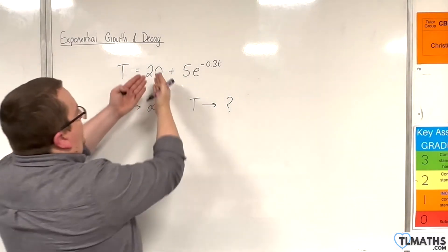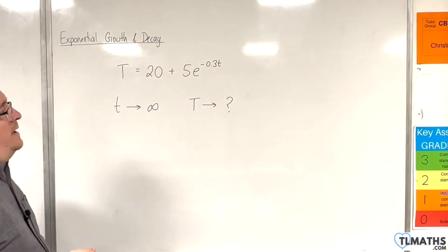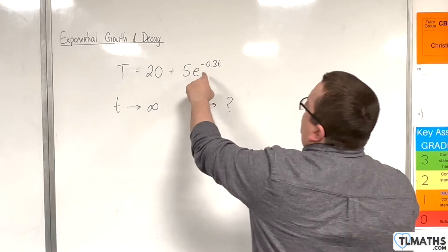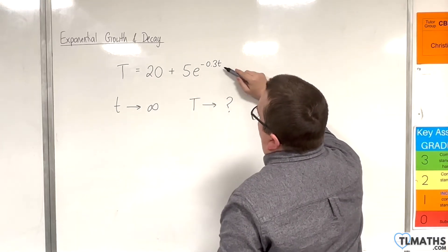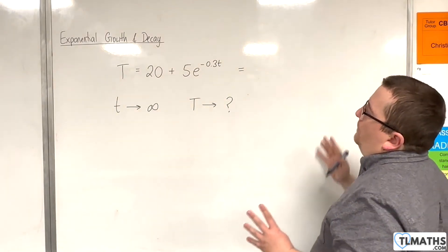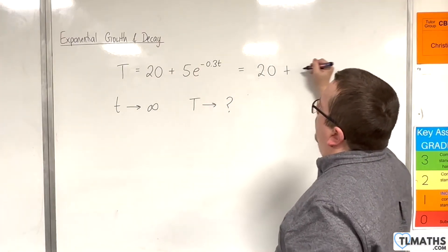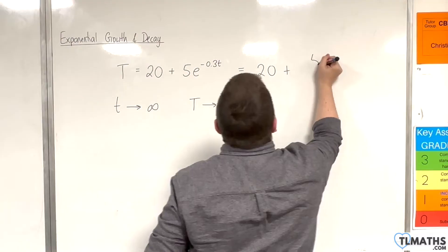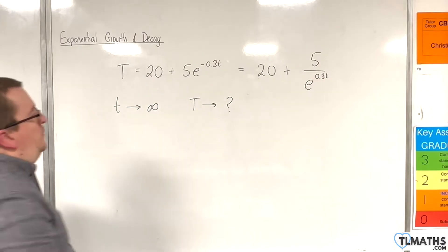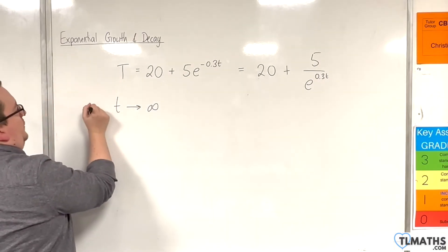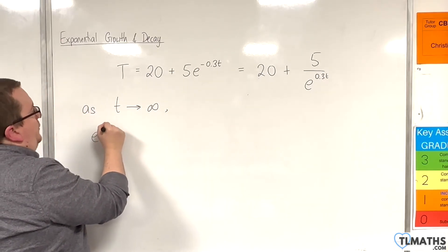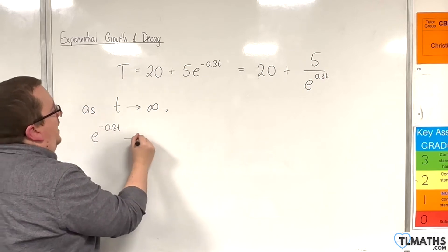When considering this equation, as t gets larger and larger, this term — e to the minus 0.3t — gets smaller and smaller. If I rewrite it as 20 plus 5 over e to the 0.3t, then as t tends to infinity, e to the minus 0.3t will tend to zero.